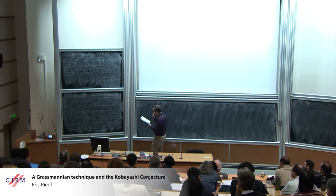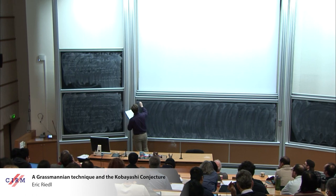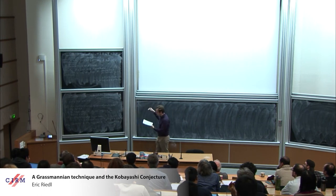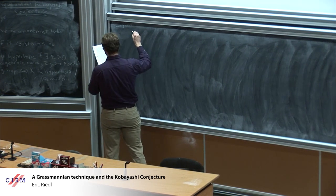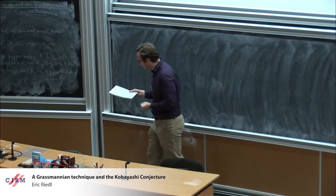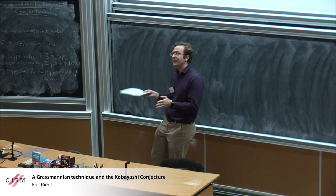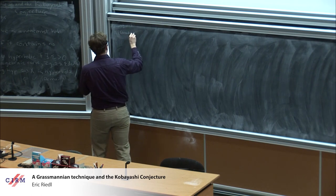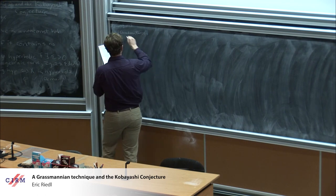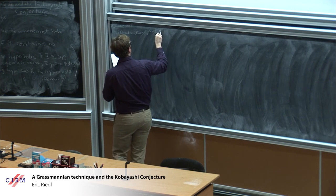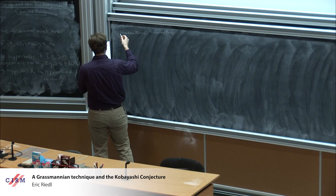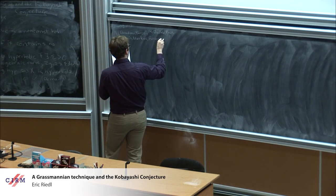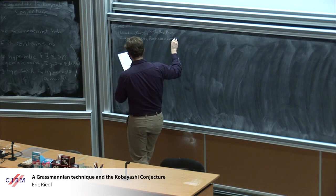We expect X to be hyperbolic if D is at least 2N minus one. Let's talk about what we know. I'm going to separate things that happened January 2018 and earlier from things within the last year. There's been so much great work on the Green-Griffiths-Lang conjecture for hypersurfaces. Names include Demailly, Diverio-Merker-Rousseau, and McQuillan-Paun for P^3. A particularly important result was by Diverio, Merker, and Rousseau, and Demailly made improvements on their bounds.